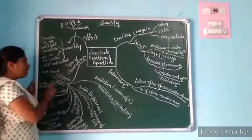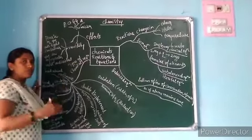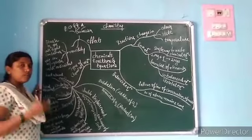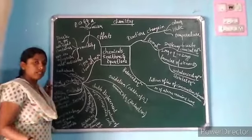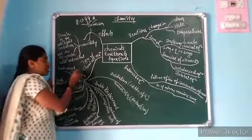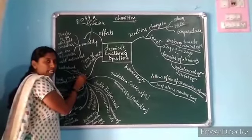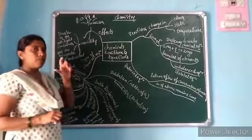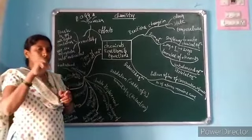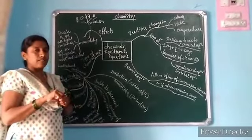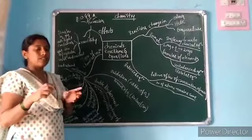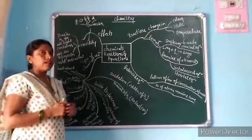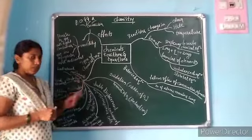Types of chemical reactions: one is exothermic — exo means out, thermic means heat. When heat is released, it is called an exothermic reaction. For example, when water is poured into calcium oxide, it releases calcium hydroxide and an enormous amount of heat — that is called exothermic.